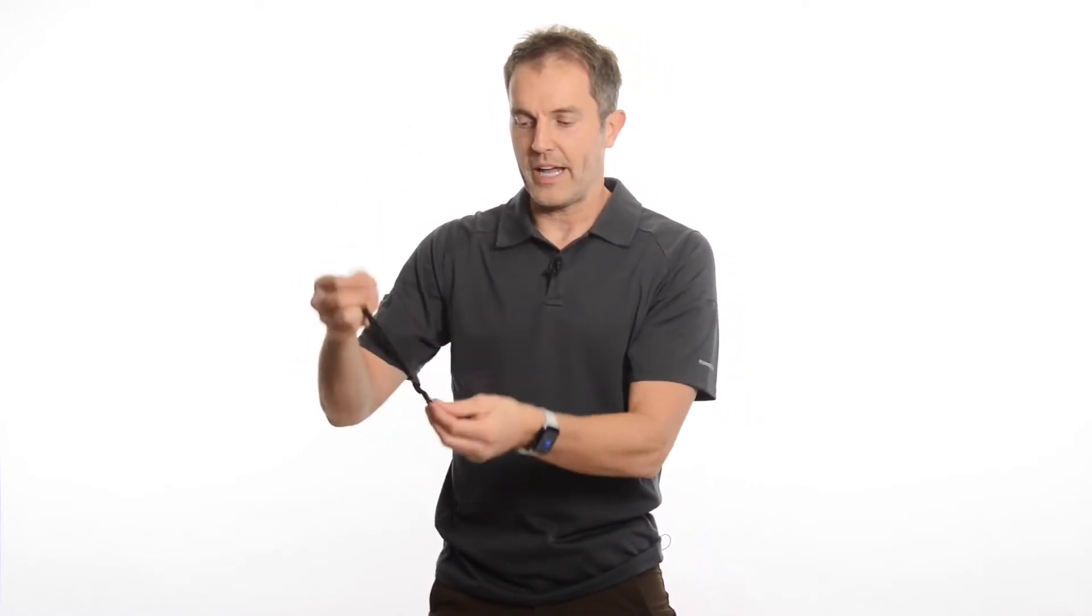And then second is this wrist tether. And the wrist tether is very nice. It's got a carabiner and a sliding buckle, so you can tighten it, loosen it. Maybe you want it tighter on my wrist, looser on the wrist.